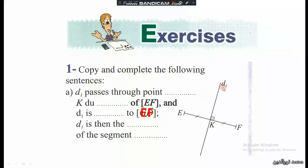d1 passes through point K, so it passes through K. K is the midpoint of EF. We have two slashes indicating that K is the midpoint of EF.